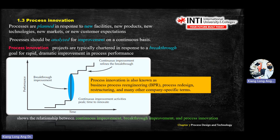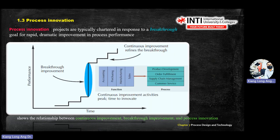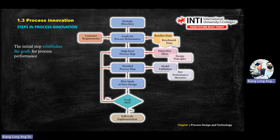In process innovation, there is a term called Business Process Re-engineering, or process redesign. We can see some breakthrough charts here. The steps in process innovation are: strategy directive, goals, high-level process map, detailed process map, pilot studies, and then full-scale implementation. This is different from the design flow we studied earlier — don't confuse the design process with the process flow.